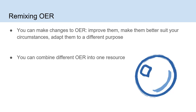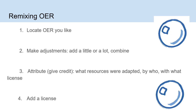You can also remix OER — make changes to OER, improve them, make them better suit your circumstances, adapt them to a different purpose, or combine different OER into one resource. It's a matter of finding OER that are useful to you and then making changes or combining them. If you want to remix OER: locate the OER you like, make adjustments, add a little or a lot, combine them, then attribute — give credit for what resources were adapted, by whom, and with what license — and add your own license.